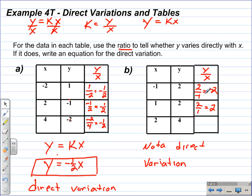And that's because the ratios, y over x, or y to x, is not the same for each pair of data.